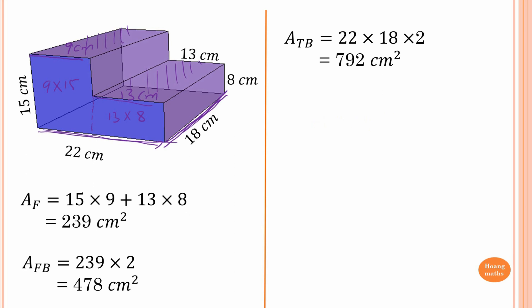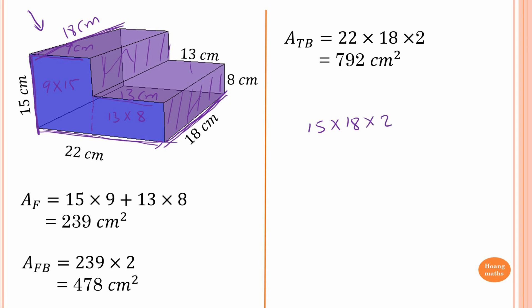What's left are the two side panels. The two stepped panels on each side add together to equal the area of the full back face. That is 15 centimeters by 18 centimeters, times 2 for both sides. So the area of the left and right sides of the prism is 15 times 18 times 2, which gives 540 square centimeters.